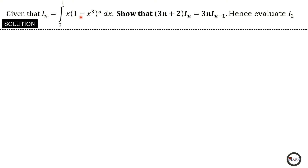Because the principle to differentiate is you must subtract one from the power, and removing one from n we arrive at n minus one. This hints us on which function we are going to let to be u and which to be dv. The function we let to be u is the function we differentiate, and the function we let to be dv is the function we integrate. Since we need the power to decrease by one, we let u equal to (1 minus x cubed) raised to the power n, so that when we differentiate the power decreases by one.